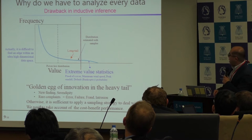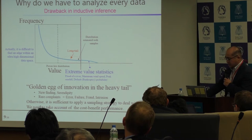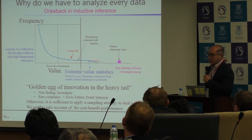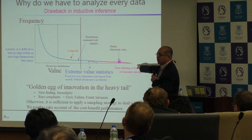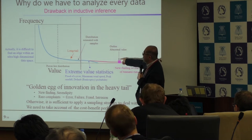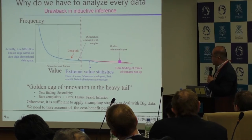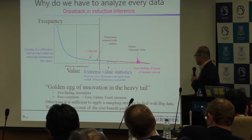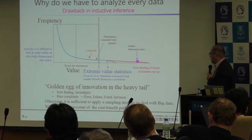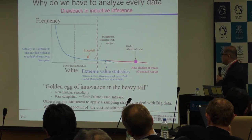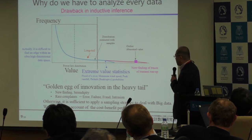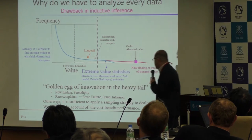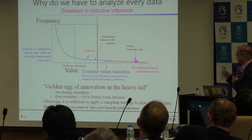A major drawback in inductive inference, including statistics, is that if we have outliers or abnormal values, some improvement is definitely possible. When we analyze every data point, it is possible to find new outliers or abnormal values. Such findings provide us serendipity — information that can only be obtained by analyzing every data point.